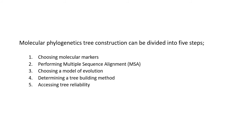Phylogenetic reconstruction is a five-step process — just to recall these five steps, some of which we have already discussed in our previous lectures. Step number four, that is determining a tree-building method, we will continue with this. In the last two lectures we talked about different methods that were distance-based methods, so today we will continue from there.